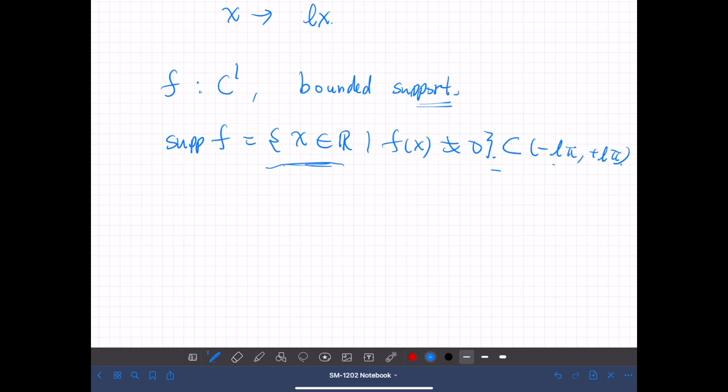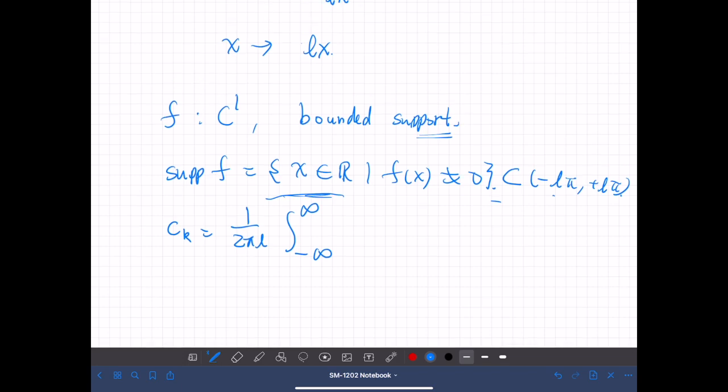Then the Fourier coefficient of this function f is given by ck equals 1 over 2πL, integral from negative infinity to positive infinity. So this interval includes the support, so beyond this interval the function is zero. So we can just extend the range of integration to infinity.